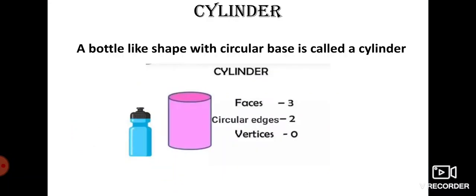Now, tell me, which shape is this? Yes, this is a cylinder. A bottle-like shape with a circular base is called a cylinder. It has 3 faces, 2 circular edges and 0 vertices or corners.